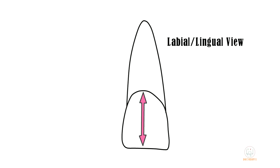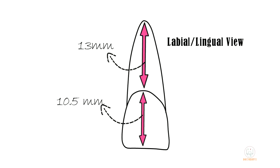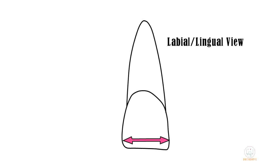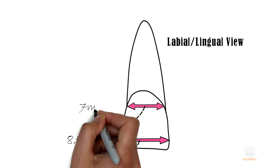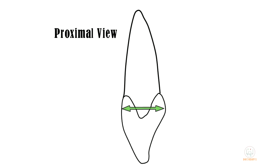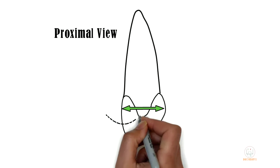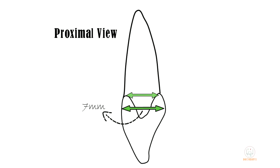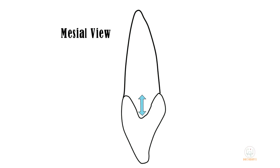Now let us see its measurements. The cervico-incisal length or crown length is 10.5 millimeters and the root length is 13 millimeters. The mesio-distal diameter of the crown, measured at the contact areas, is 8.5 millimeters and at the cervix or root junction is 7 millimeters. From the proximal aspect, the labio-lingual diameter of the crown measured at the level of the cingulum is 7 millimeters and at the cervix is 6 millimeters.